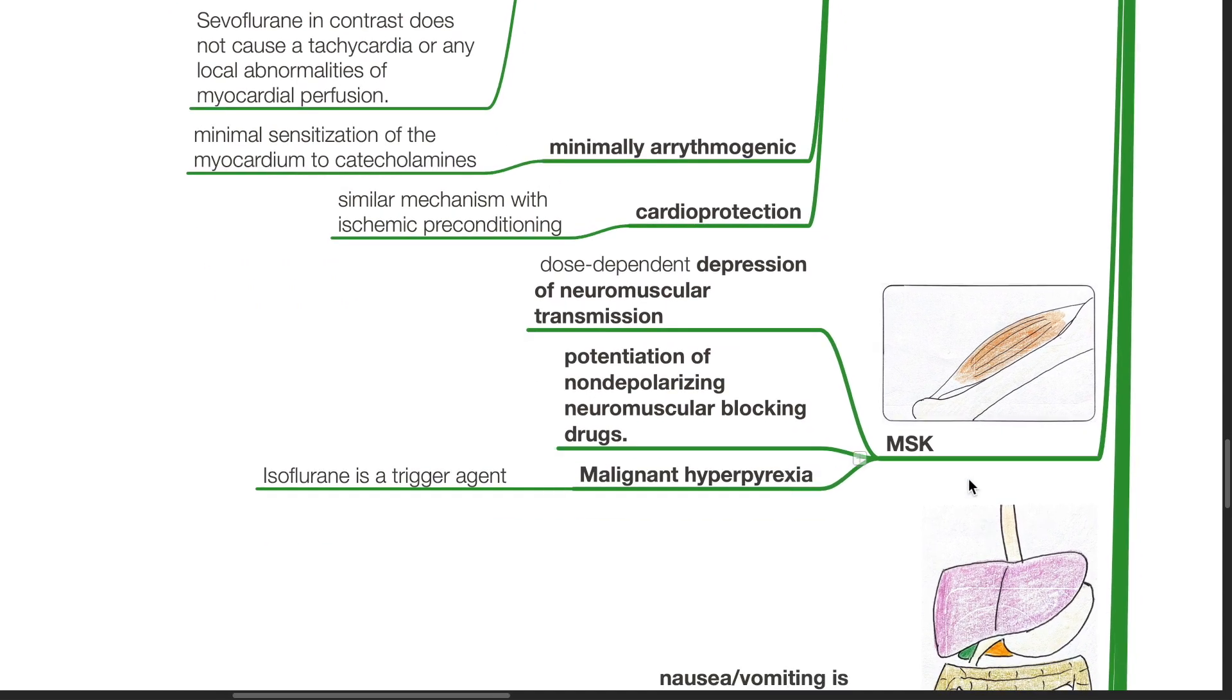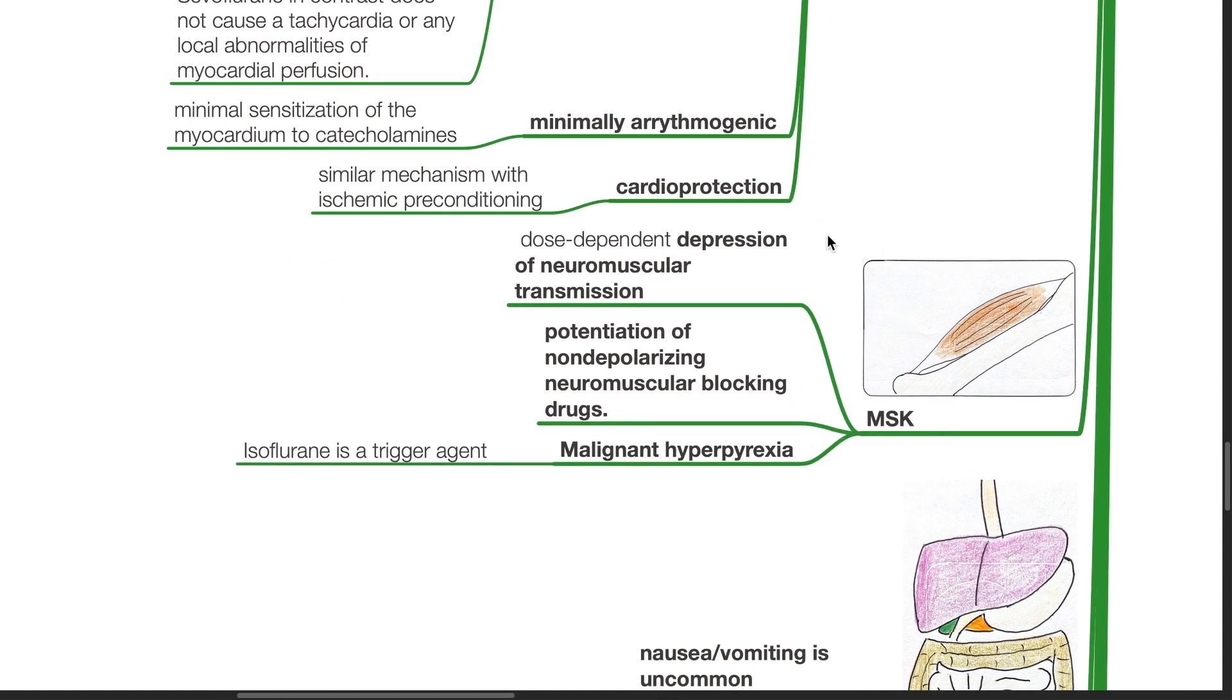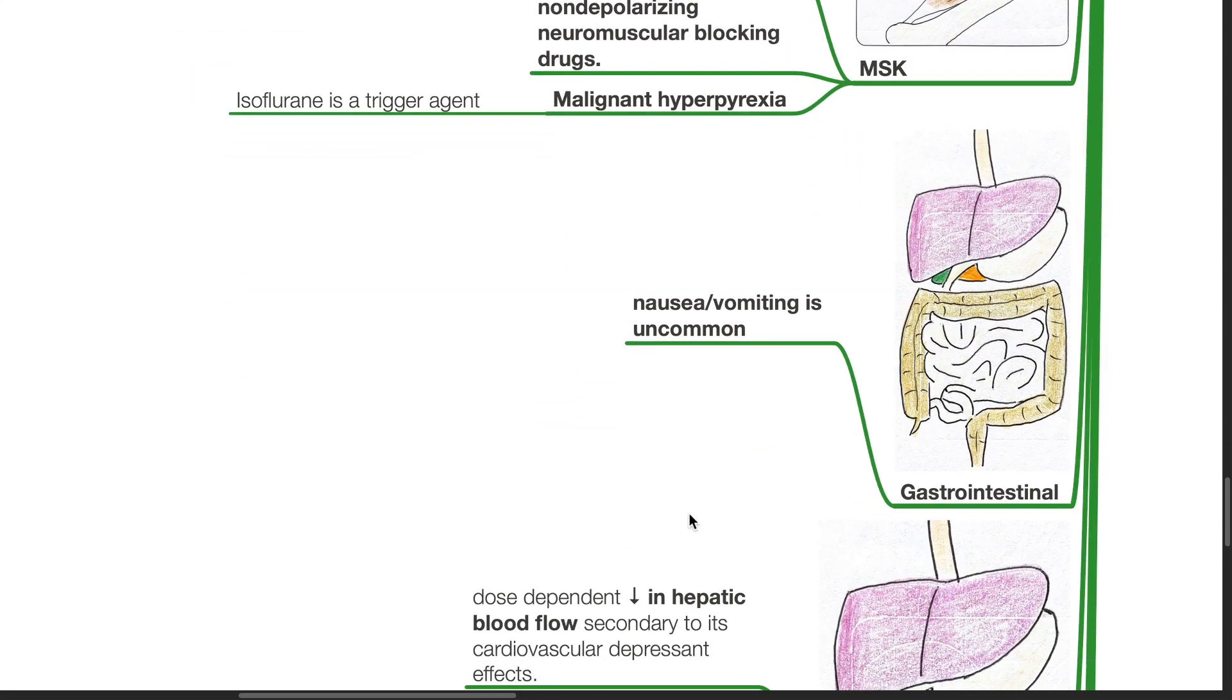Musculoskeletal system. There is dose-dependent depression of neuromuscular transmission. Potentiation of non-depolarizing neuromuscular blockers occurs. Isoflurane is a trigger agent for malignant hyperpyrexia. Nausea and vomiting is uncommon.